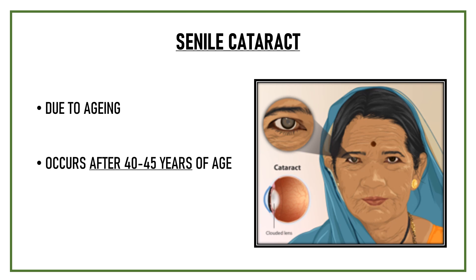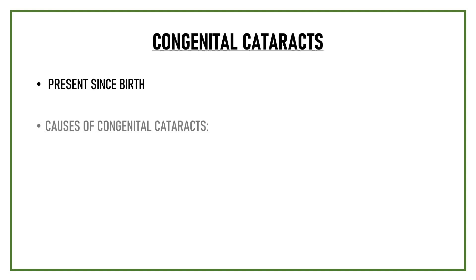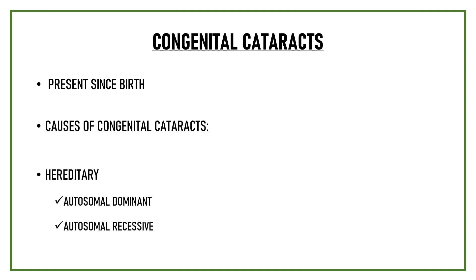Based on the age of presentation, other cataracts that are seen are congenital cataracts, which are present since birth. They can be hereditary — in that case, they can be autosomal dominant, autosomal recessive, or may even show X-linked inheritance. Approximately one-third of all congenital cataracts are hereditary.